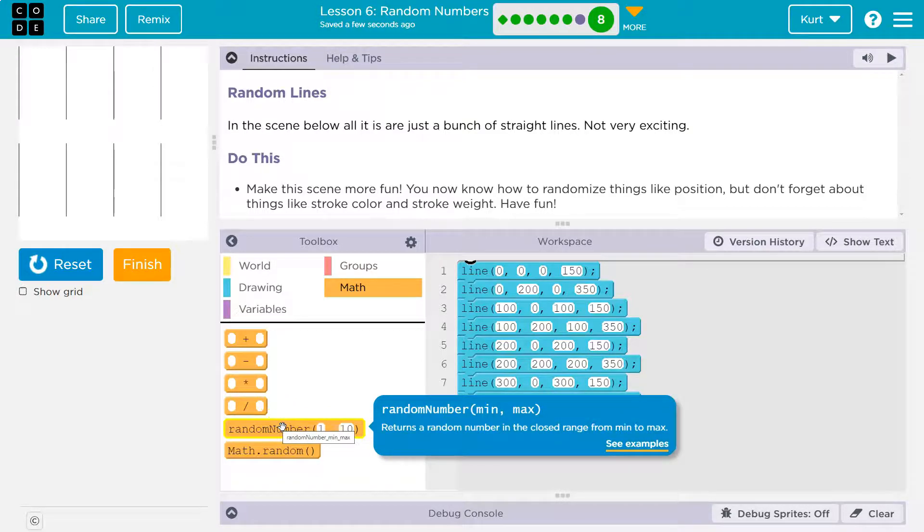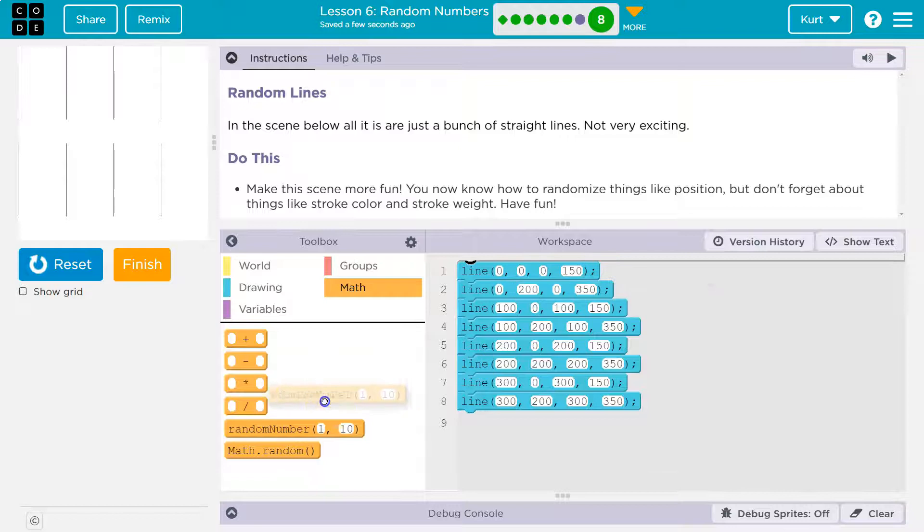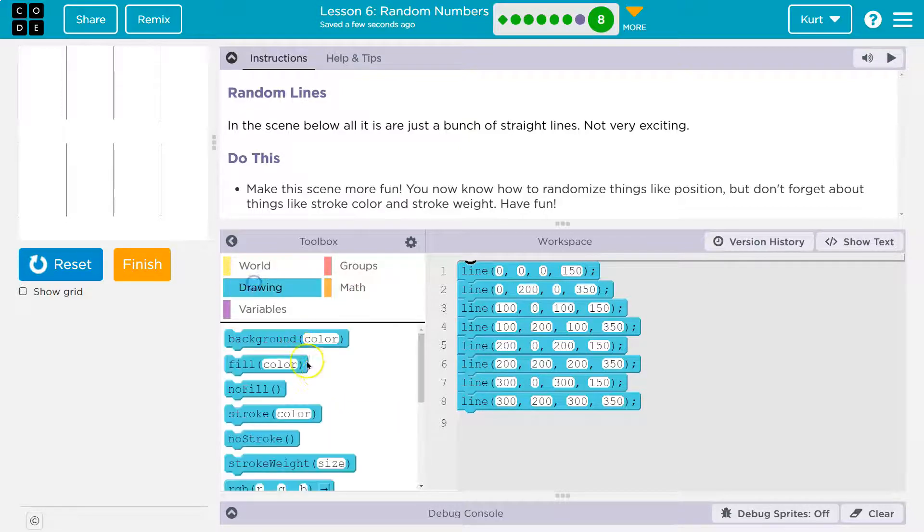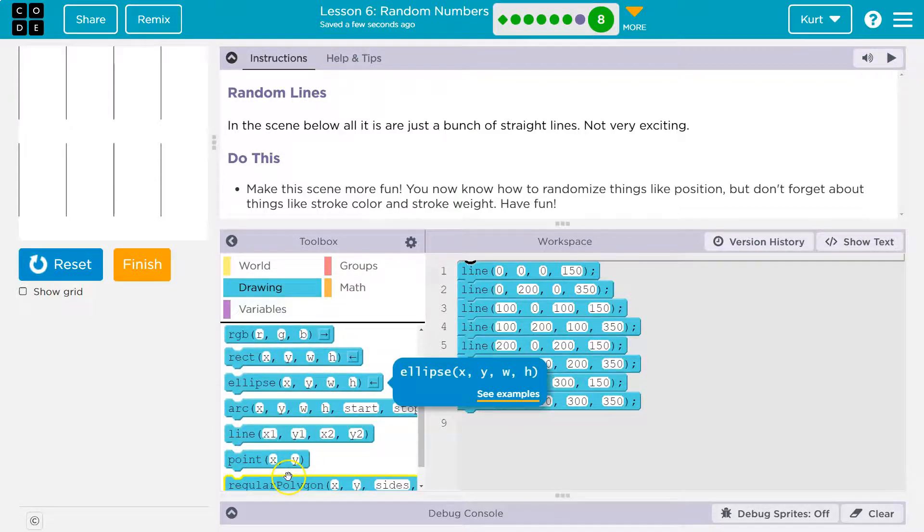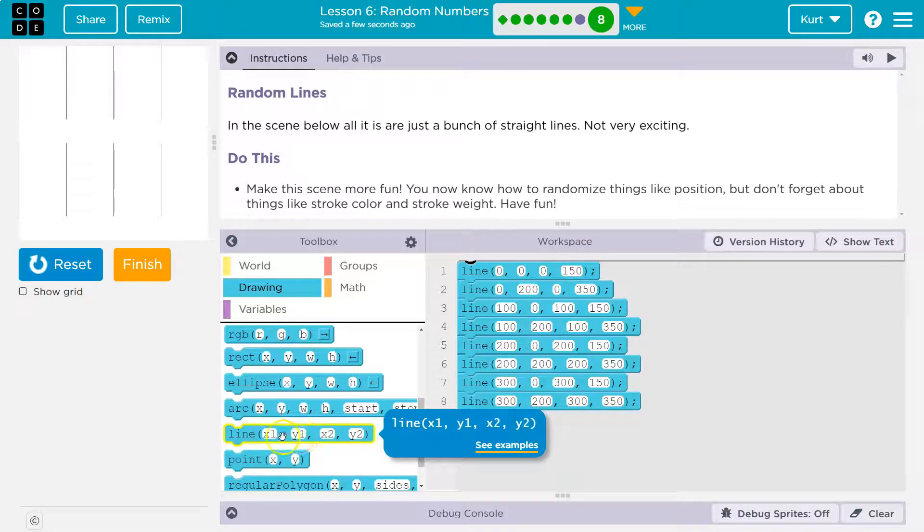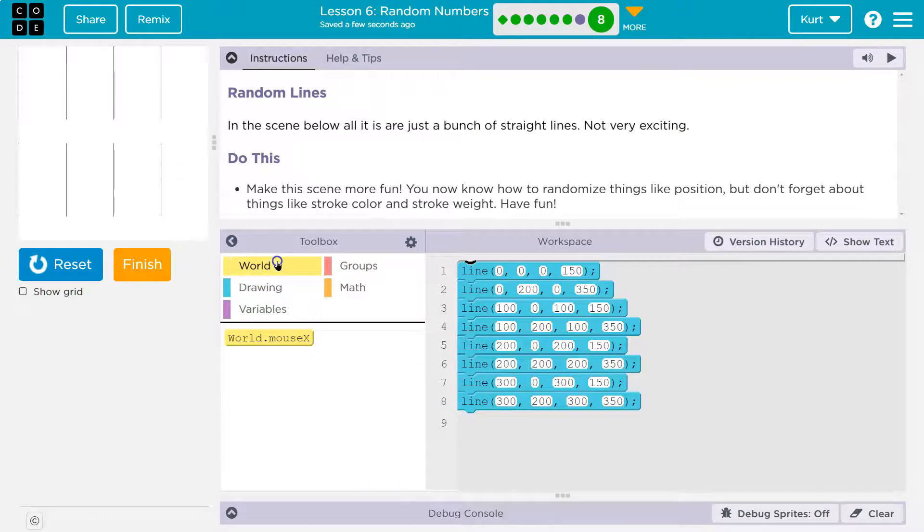So I'm going to just... Remember with a line, when we're doing drawing, line, it's x1, right? So the first point xy, the location of the first point, xy, the location of the second point, and it draws the line in between.